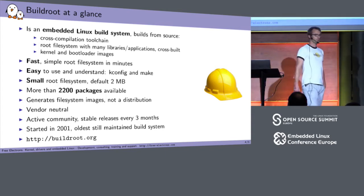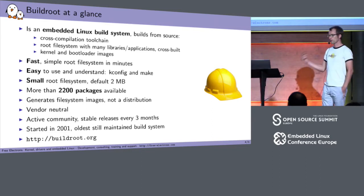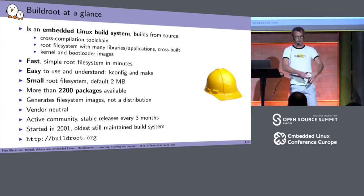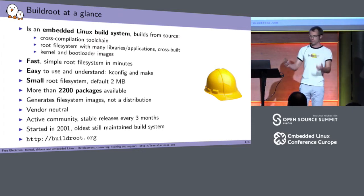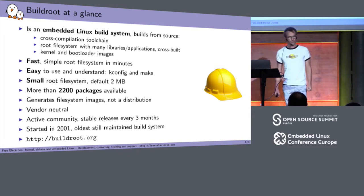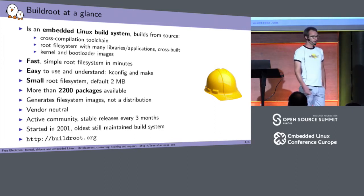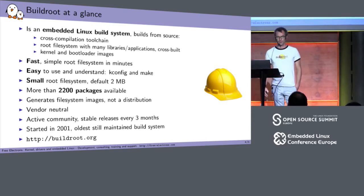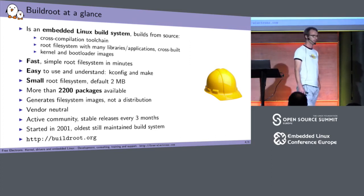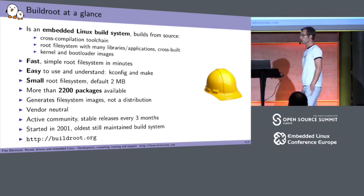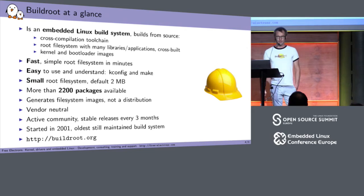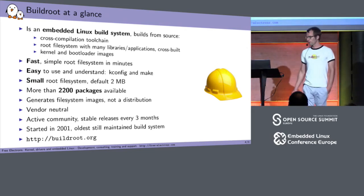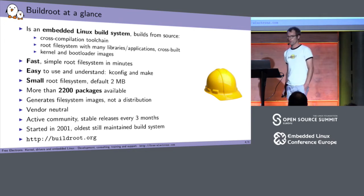We generate file system images. Contrary to OE or Yocto, we don't generate complete distributions with binary packages — we really only generate something like an ext2 image or a UBIFS image without any package management system. So if you want to do upgrades, you do a full system upgrade. It's a vendor-neutral tool maintained by an open source community with lots of contributors from different companies. We do stable releases every three months and have been doing that since 2009. The project started in 2001, which makes it, I believe, the oldest still-maintained build system.